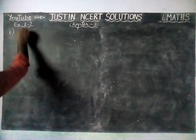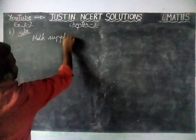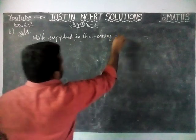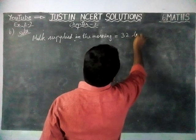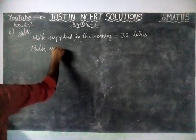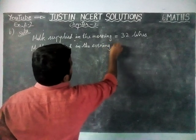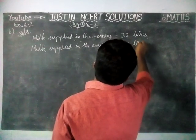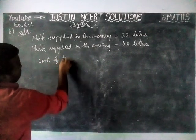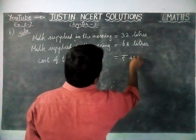First, we have to write the given information. Milk supplied in the morning is equal to 32 liters. Milk supplied in the evening is equal to 68 liters. Cost of the milk is rupees 45 per liter.